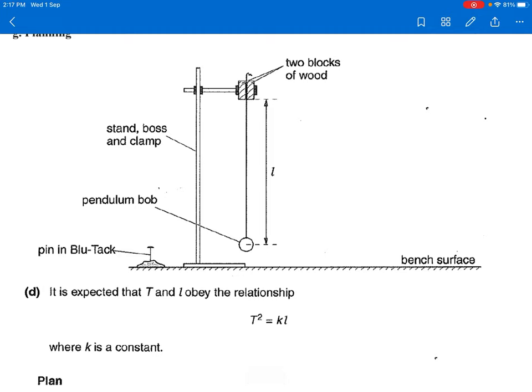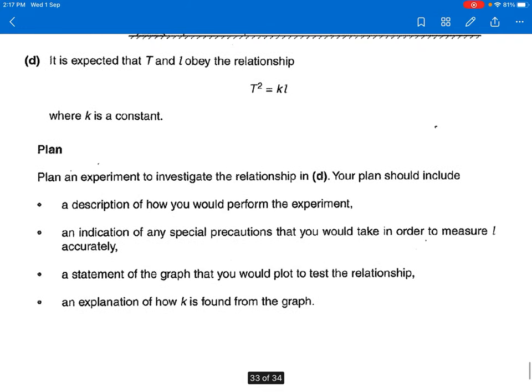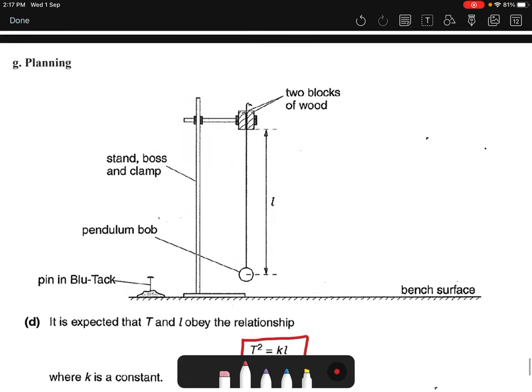They ask us to plan an experiment to investigate the relationship T² = kl. So they tell us to give a description and any special precaution you need to take in order to measure error accurately. Number three is a statement of the graph that you will plot to test the relationship and explanation how k can be found from the graph. So first of all, when you are doing planning questions, remember these three alphabet letters: VIP. What does VIP - not the very important people - V stands for variable.